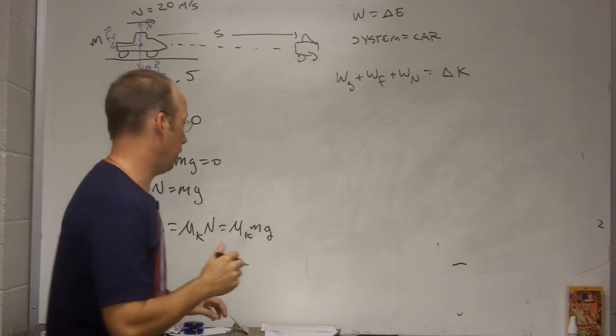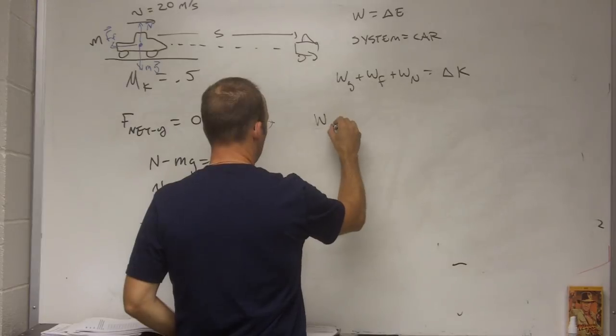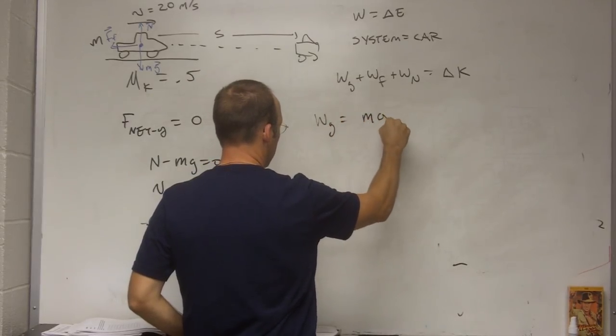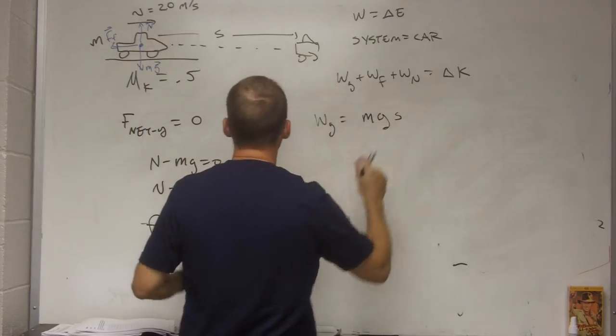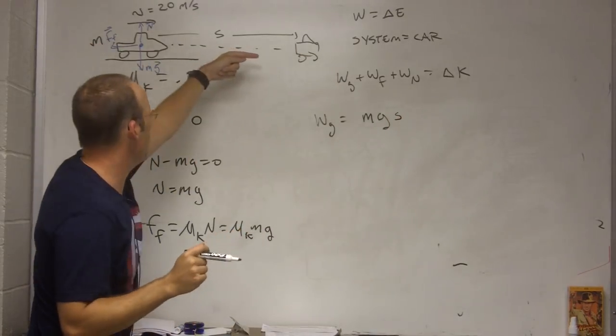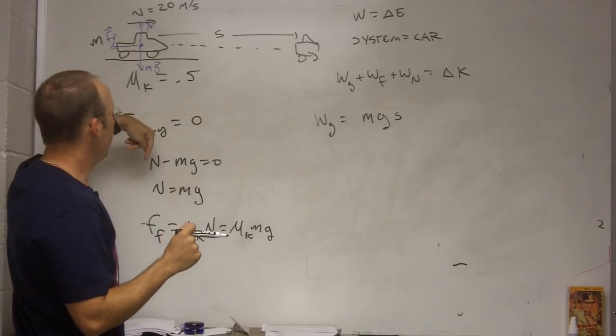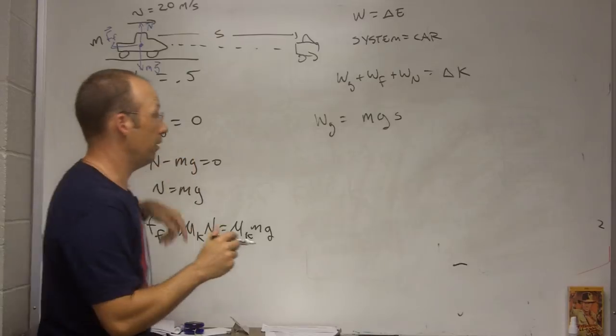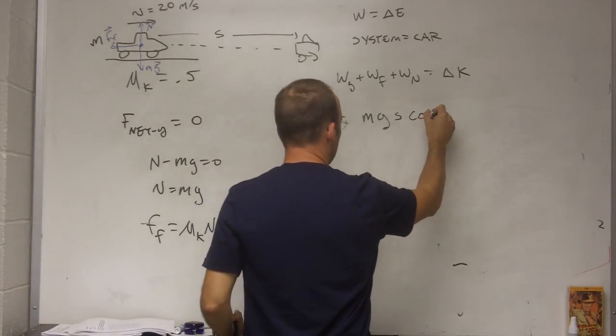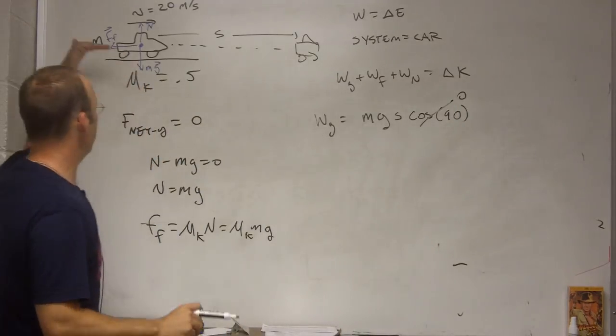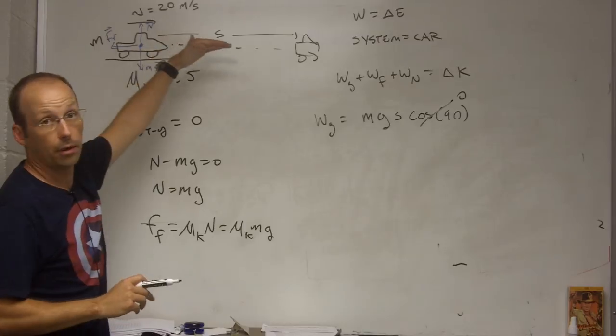So first, let me look at the work done by gravity. The work done by gravity is going to be the gravitational force times the distance, s, times the angle between the direction the car moves and the gravitational force. In that case, that's 90 degrees, so it's going to be cosine of 90 degrees, which is zero. So, gravity does no work on this as it moves along that way.